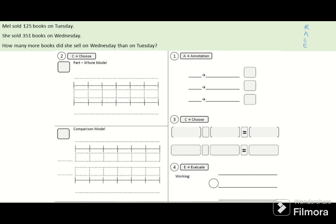Mel sold 125 books on Tuesday. She sold 351 books on Wednesday. How many more books did she sell on Wednesday than on Tuesday?